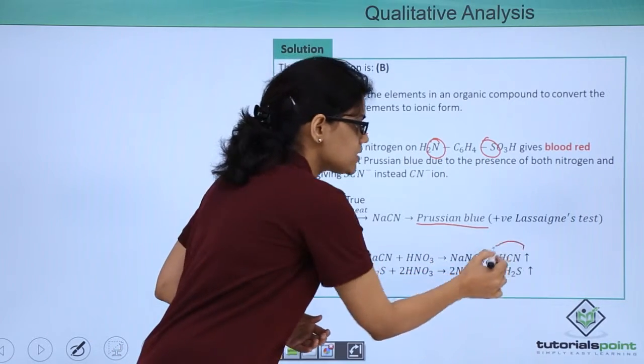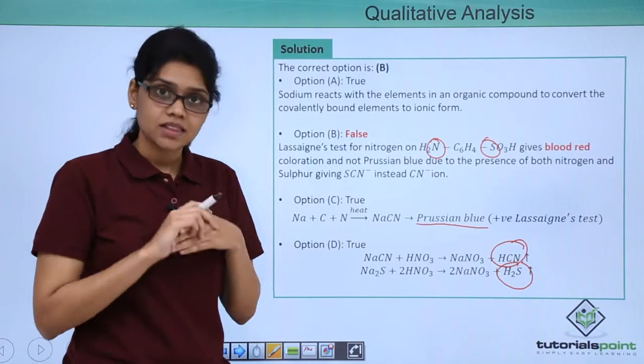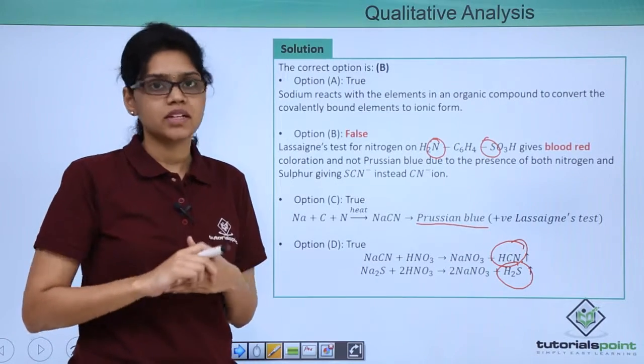HNO3 removes this particular NaCN and Na2S formed in the sodium fusion extract as HCN and H2S gases, which leaves the reaction mixture and thus it does not interfere with the silver nitrate test.